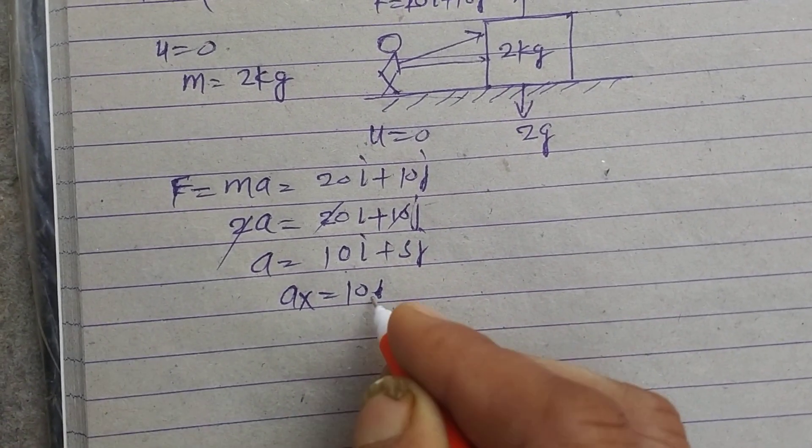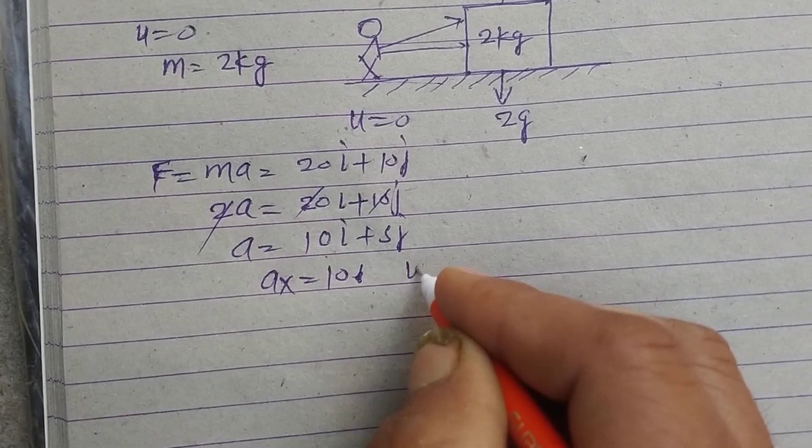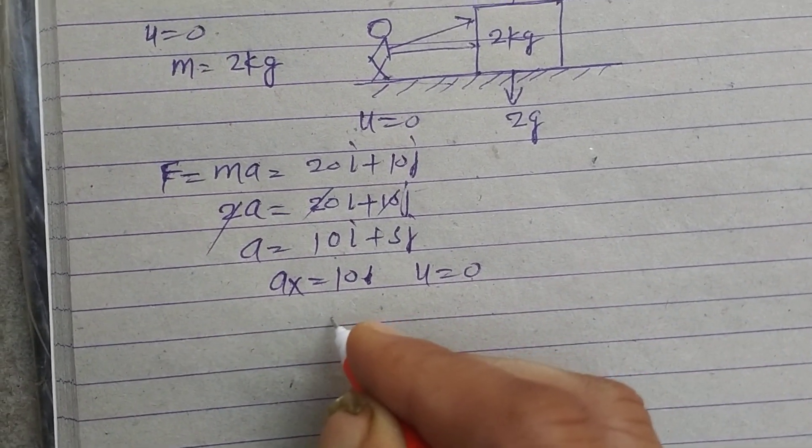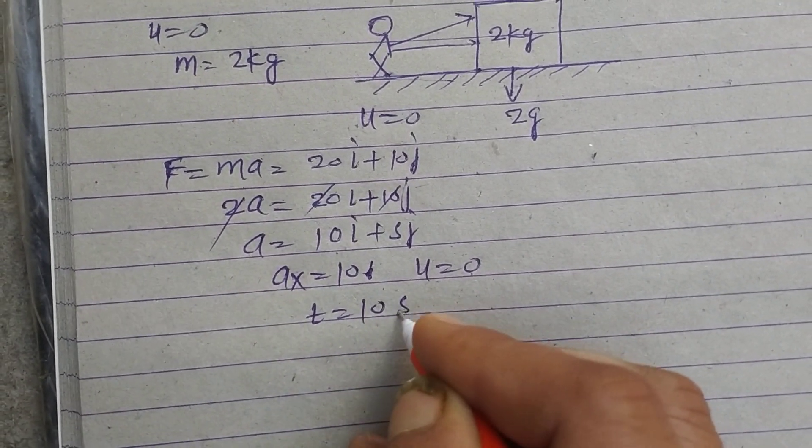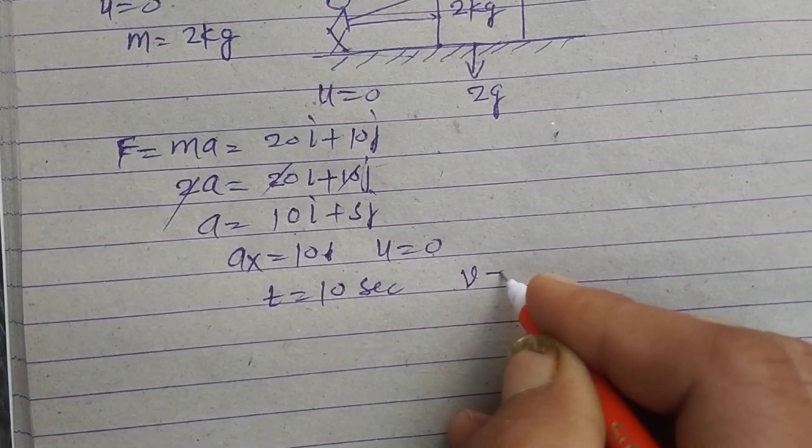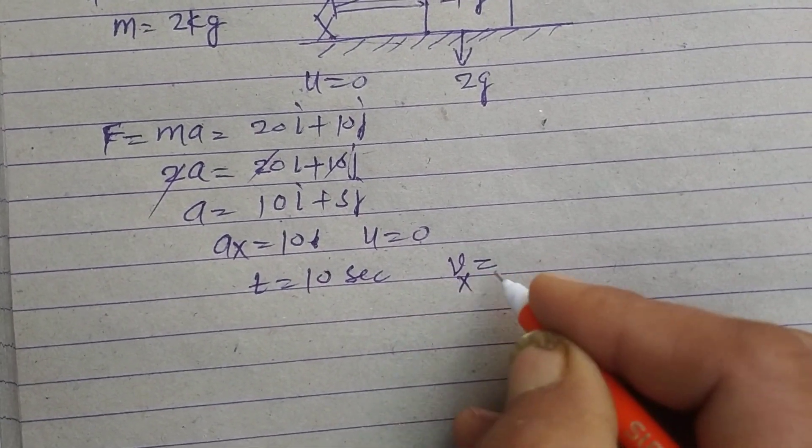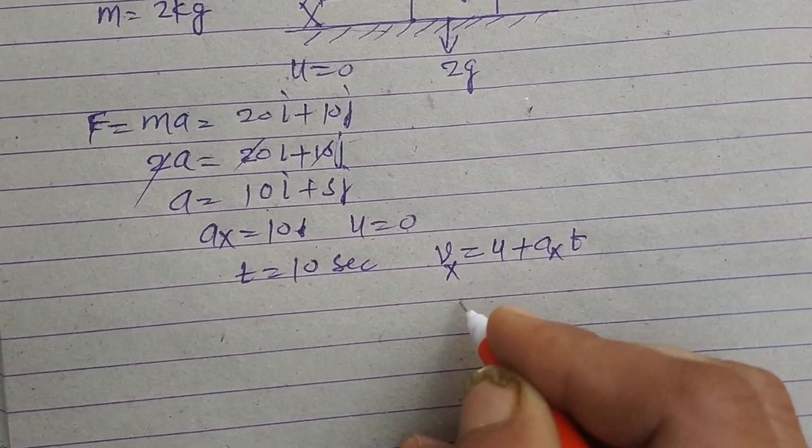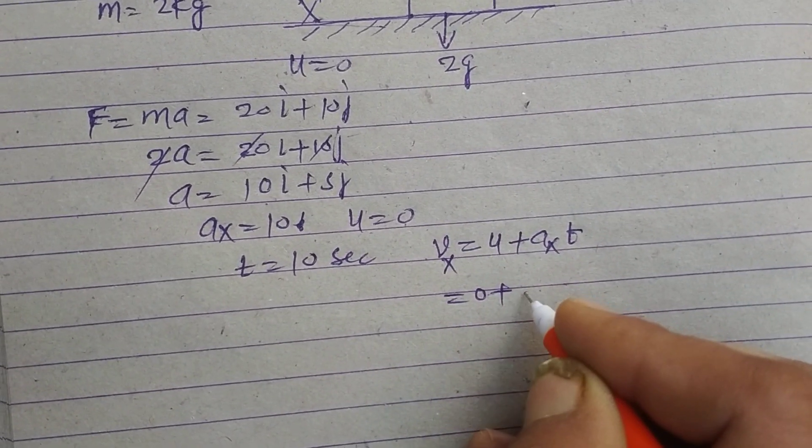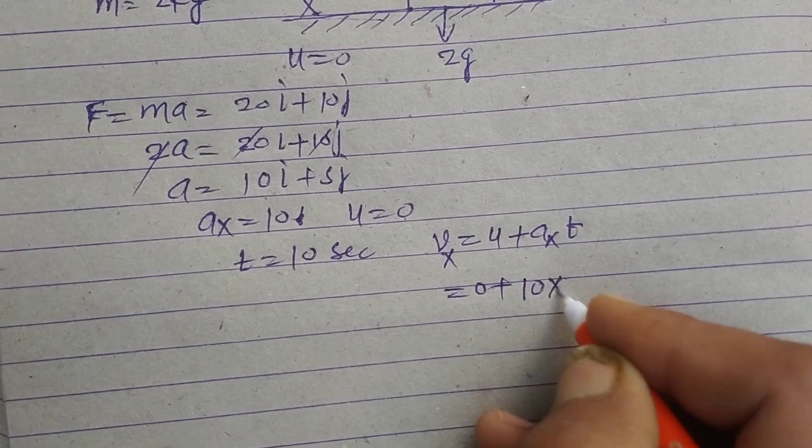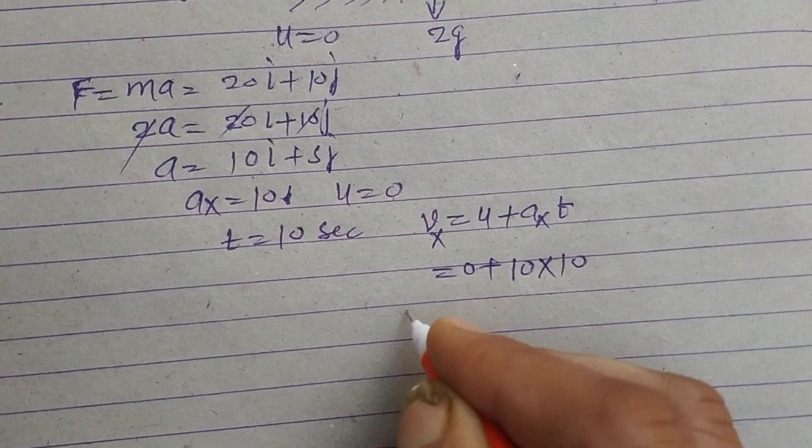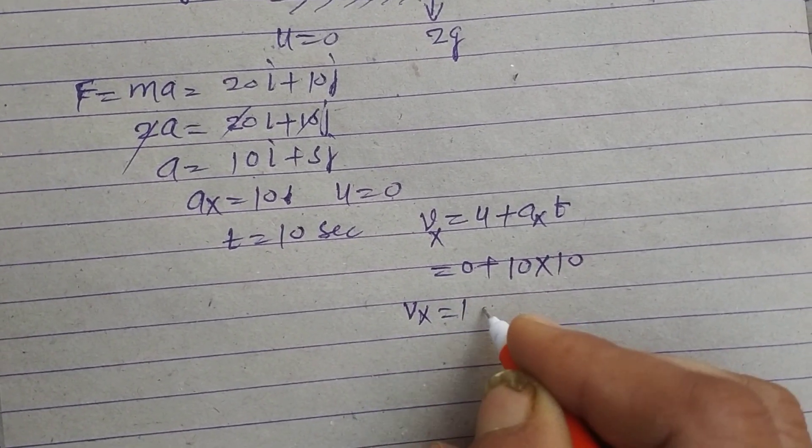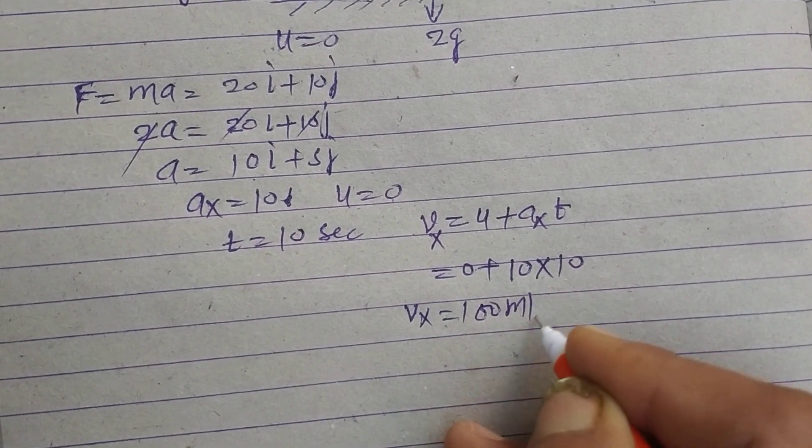and initial velocity is 0 and time is given as 10 seconds. So therefore velocity after 10 seconds in x direction, vx equal to u plus ax into t. So u is 0, ax is 10 and t is 10. So velocity after 10 seconds is 100 meter per second in x direction.